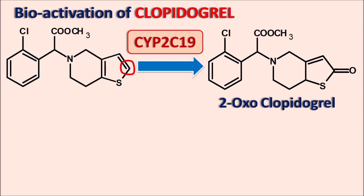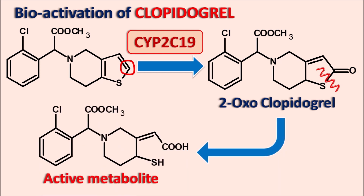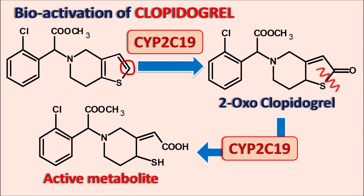In the next step, the ring is opened to produce an active metabolite with a free thiol group. This step is also mediated by CYP2C19. That is why CYP2C19 is very important for the bioactivation of clopidogrel.